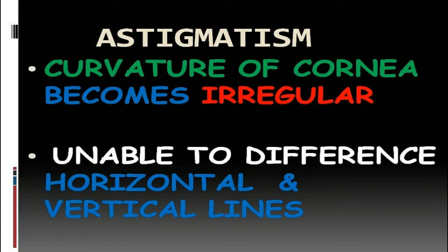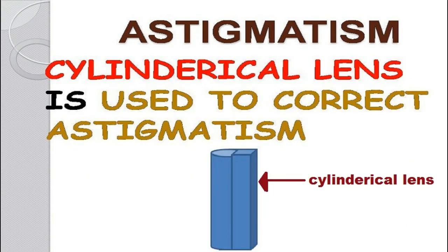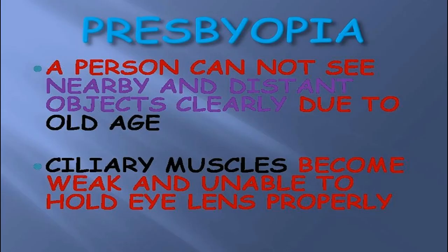The next kind of defect is astigmatism. In astigmatism, the curvature of the cornea becomes irregular, so a person is unable to differentiate between horizontal and vertical lines. The eye lens of a person with astigmatism is unable to focus all light rays from objects at a single point — some rays are focused before the retina, some behind, so a person cannot see nearby or far objects clearly. This defect can be corrected by using a cylindrical lens, as shown in the diagram.